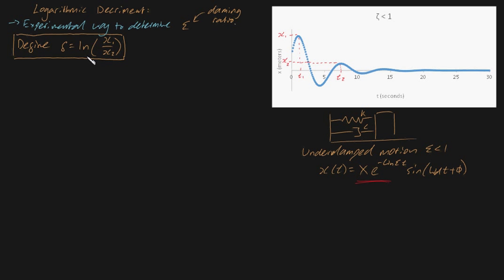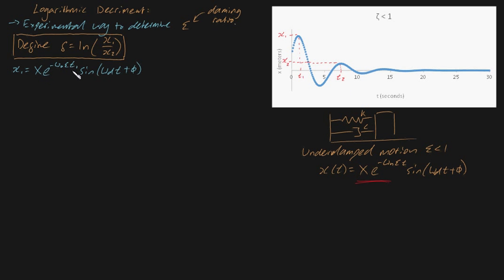So if we plug x1 and x2 into this, what would we get? To find x1, we go back to our equation of motion. x1 will be a specific value when t equals t1, so x1 equals x times e to the minus omega_n zeta t1, times sine of omega_d t1 plus phi. We can do the exact same thing for x2, just replacing t1 with t2. Now it will be necessary to note that t2 can be written as t1 plus the period, which I'll denote t subscript d — the damped period.